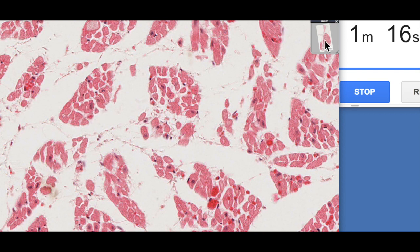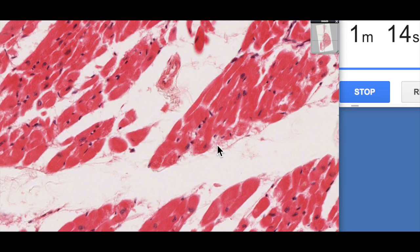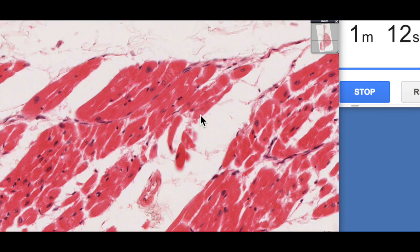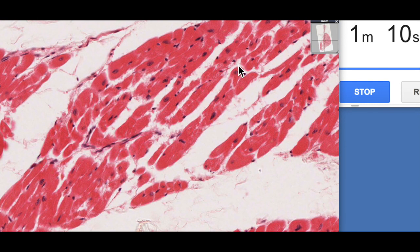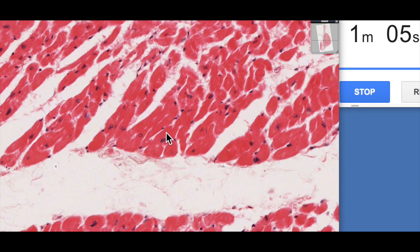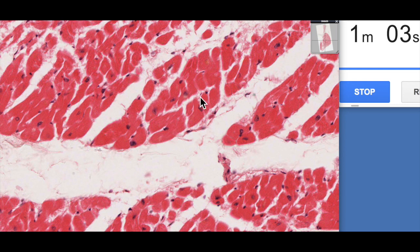When we actually have a look at the ventricular cardiomyocytes, they're much larger. Obviously most of these are obliquely sectioned here. If we were to have a look at some of these in longitudinal section, of course we'd see striations typical of cardiac muscle.